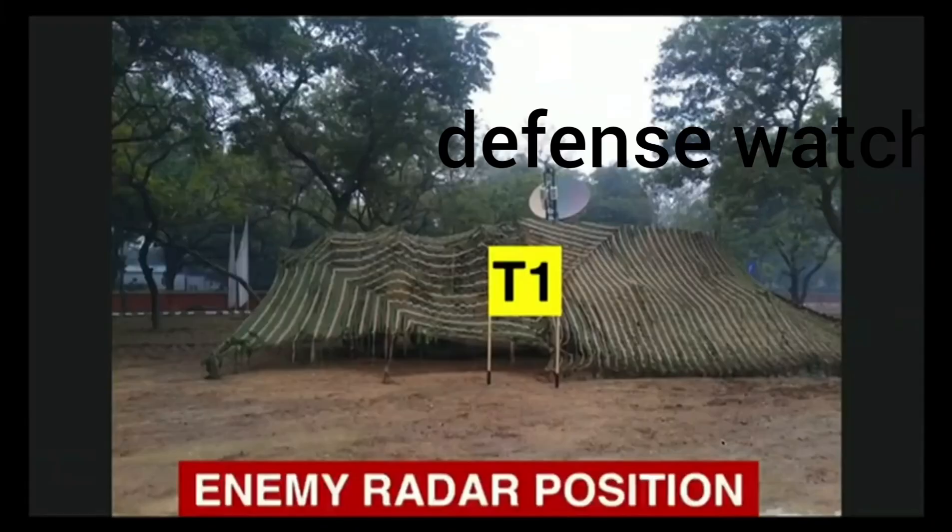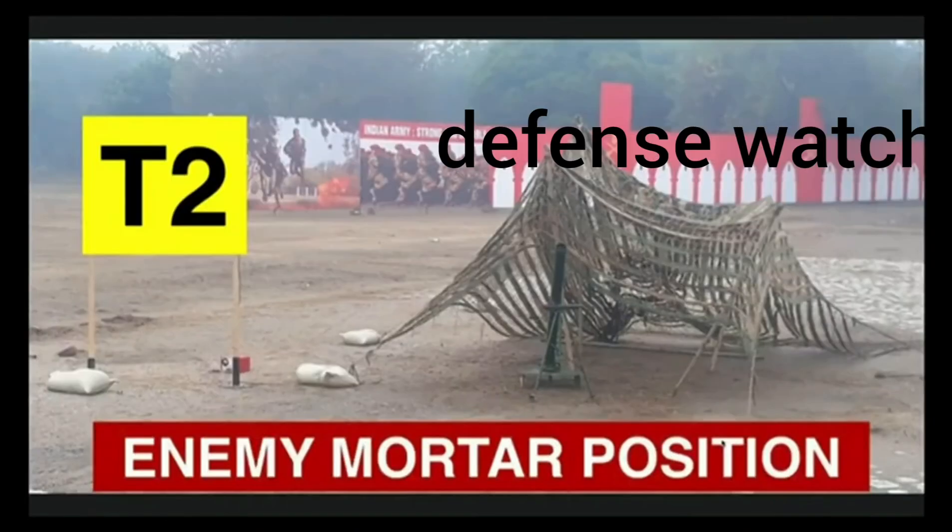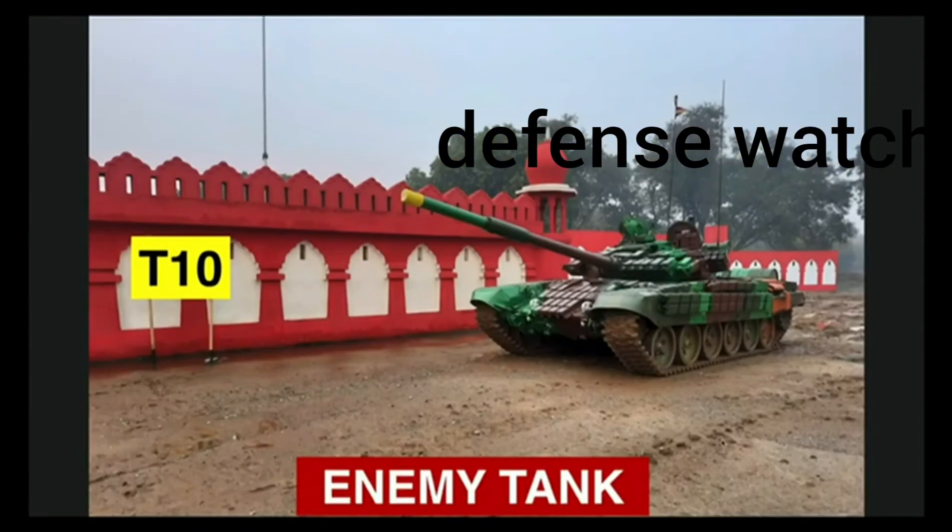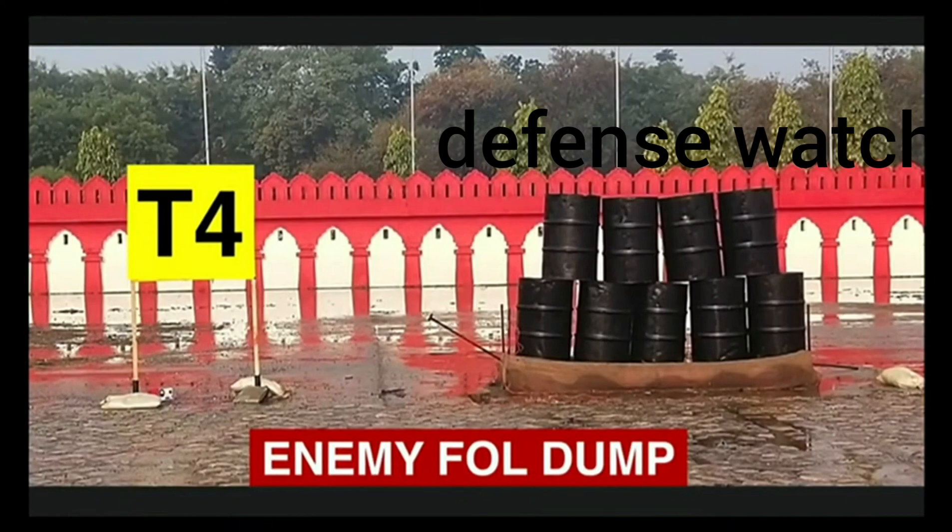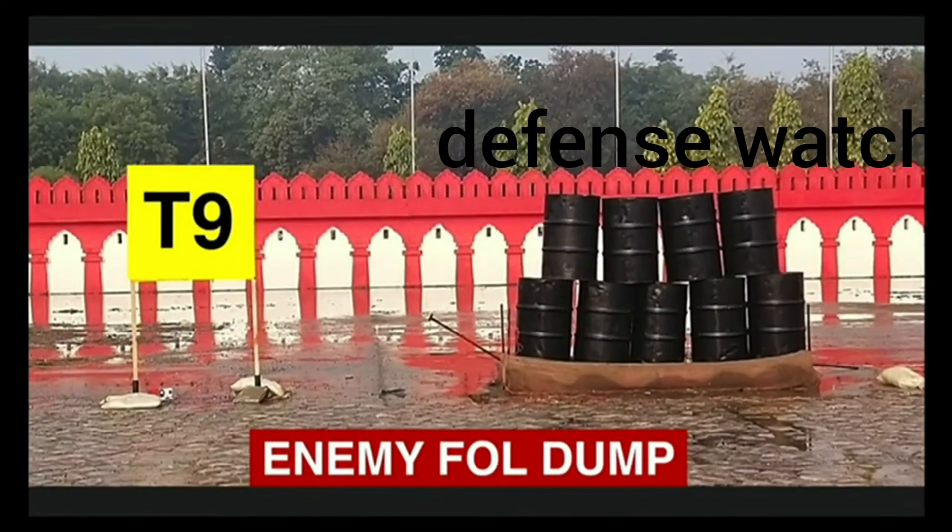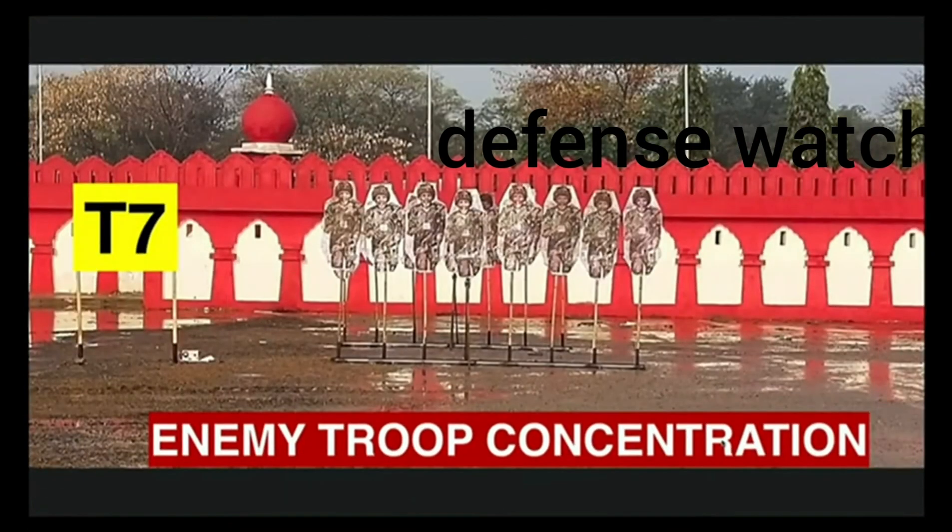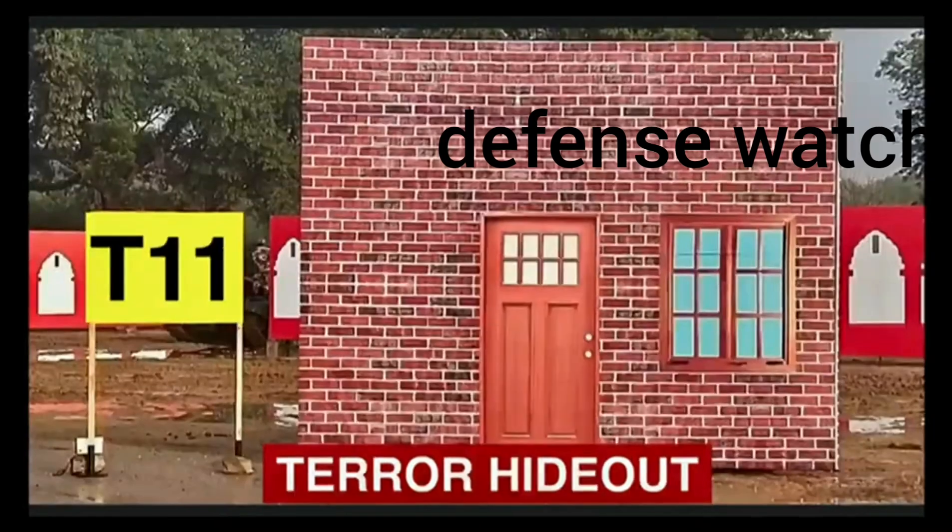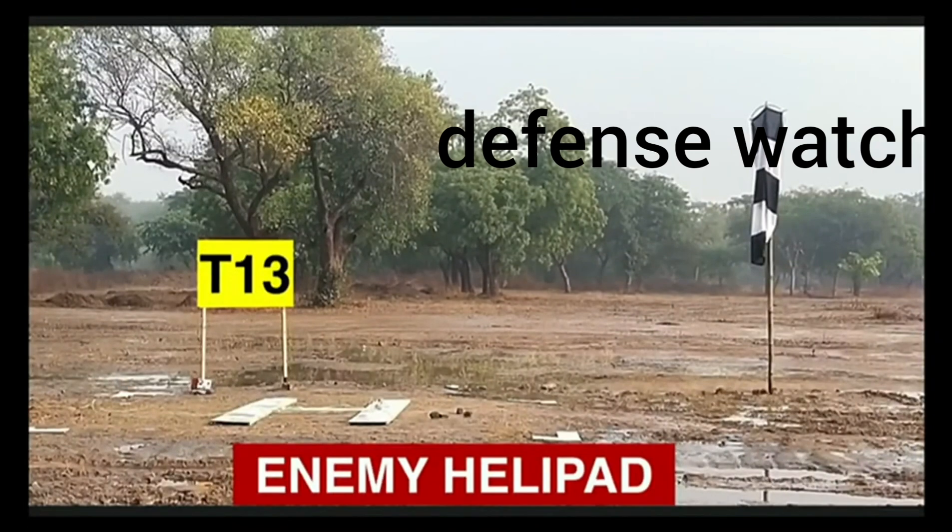Tango 1 depicts an enemy radar position on the extreme left. Tango 2 to your left and Tango 12 to your right depict enemy mortar positions. Tango 3 to your left and Tango 10 to your right indicate enemy tanks. Tango 4 and Tango 5 to your left, Tango 8 and Tango 10 to your right depict enemy FOL dumps. Tango 6 and Tango 7 are enemy troop concentrations. Tango 11 to your right is a terror hideout, while Tango 13 on your extreme right depicts an enemy helipad.